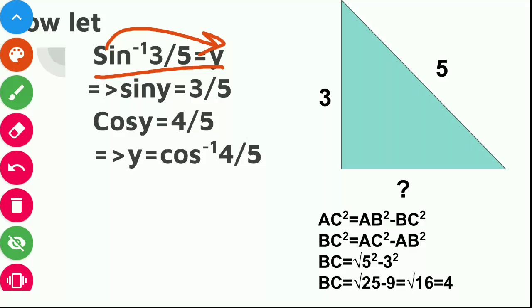Now, again by applying Pythagoras theorem, our perpendicular is 3 and hypotenuse is 5. We will name this triangle as ABC and this angle y. So AC square is equal to AB square minus BC square.